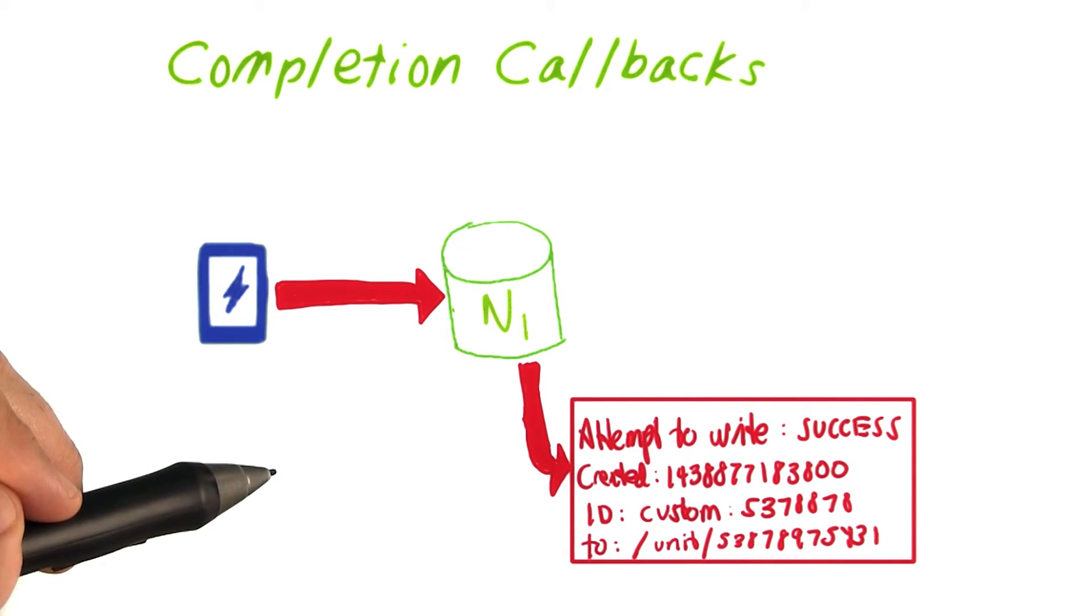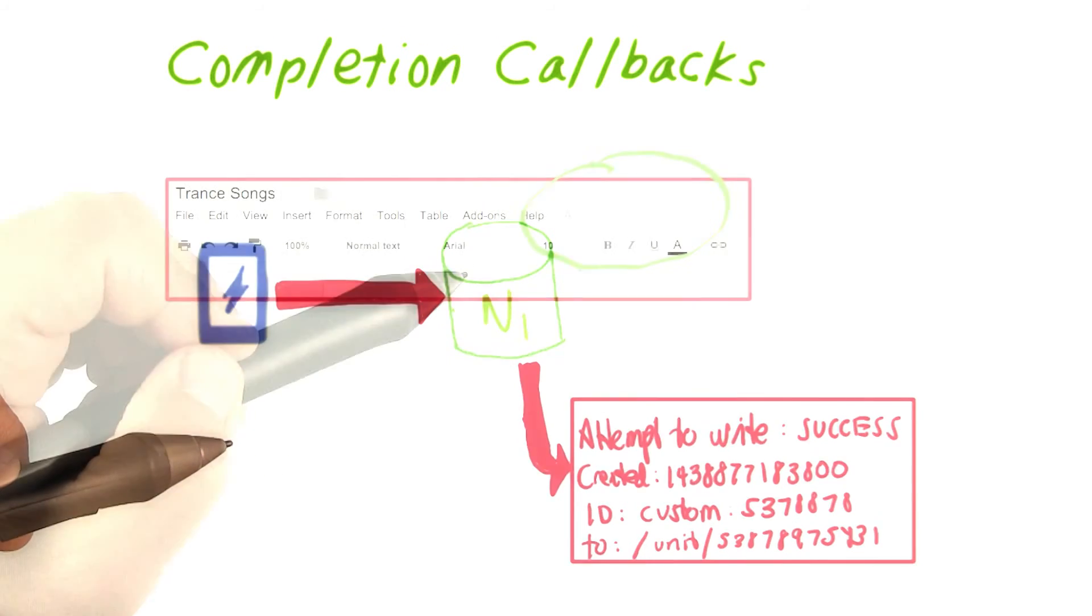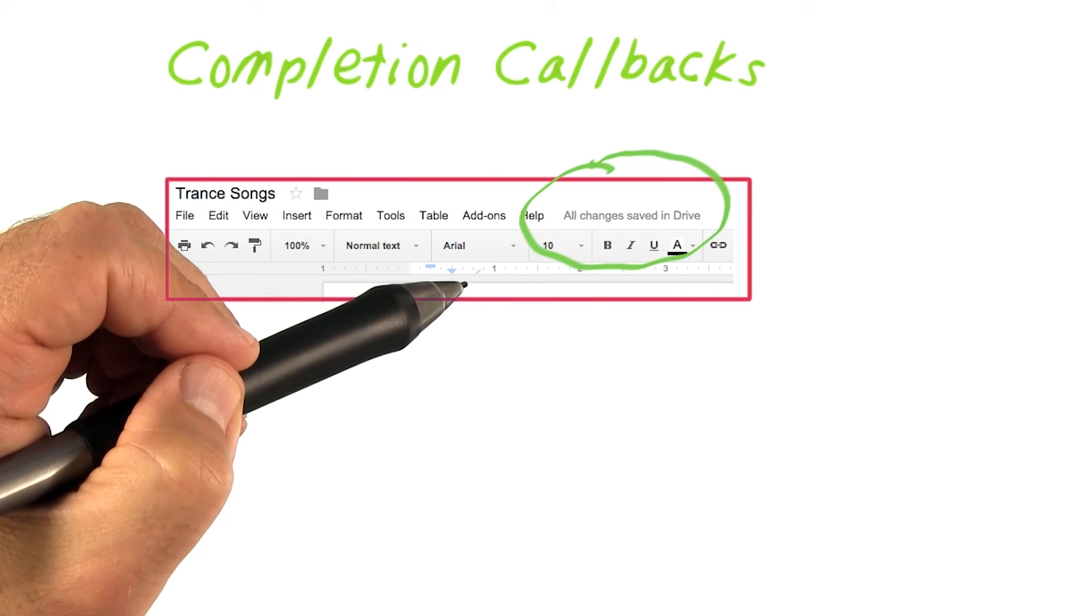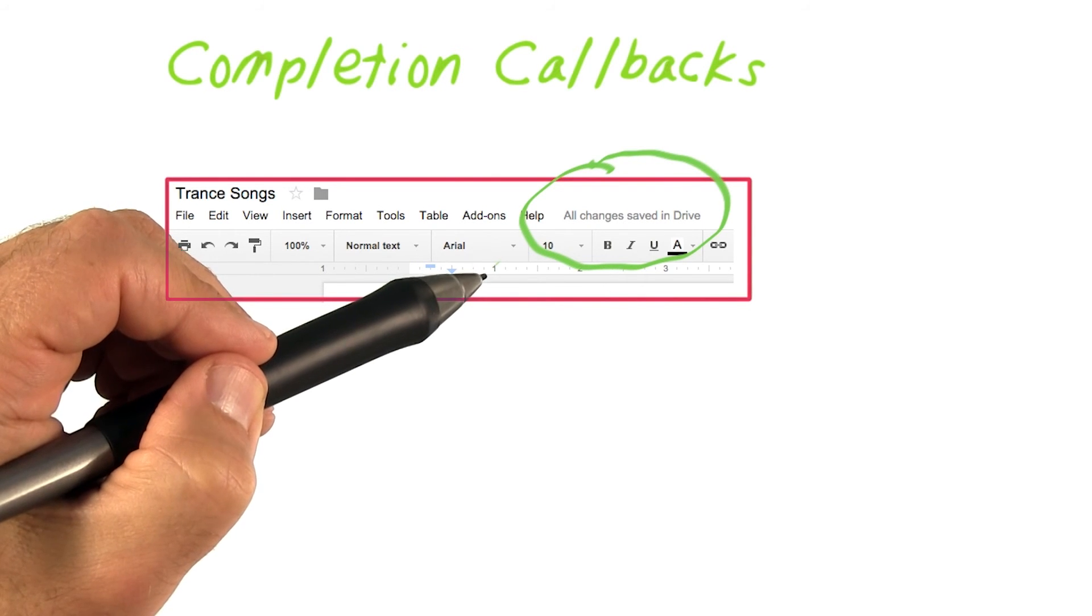Another use would be to use a completion callback to fire when a value is returned that is outside of a threshold. As a comparison, have you ever seen the all changes saved to drive message in Google Docs?